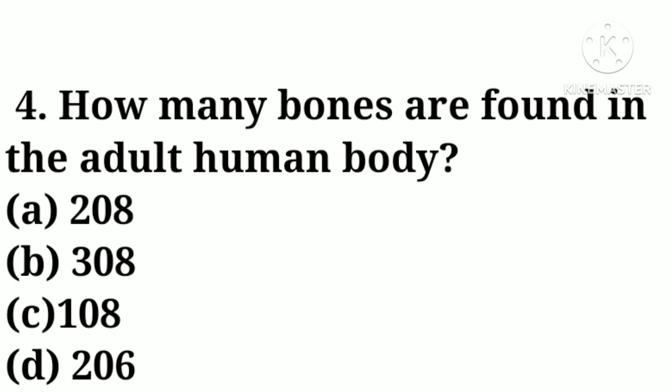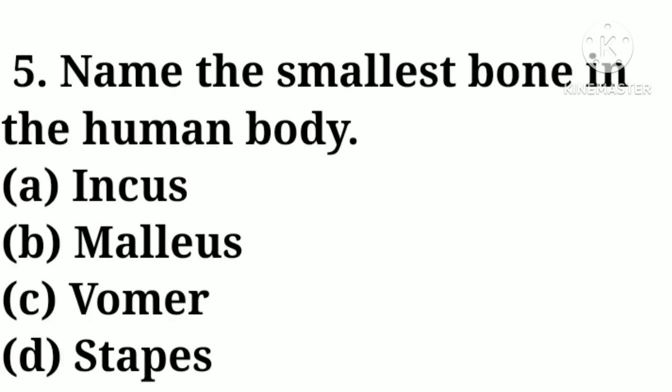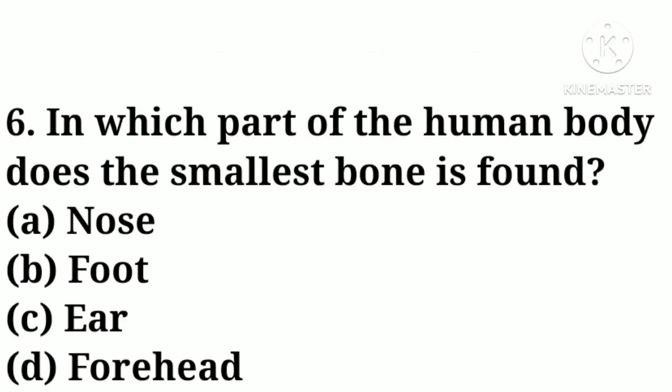Question number four: how many bones are found in the adult human body — option A: 208, option B: 308, option C: 108, option D: 206. Correct answer: option D, 206. Question number five: name the smallest bone in the human body — option A: incus, option B: malleus, option C: stapes. Correct answer: option D, stapes.